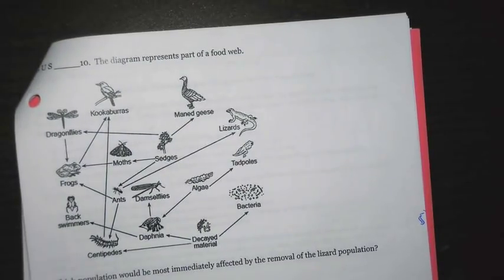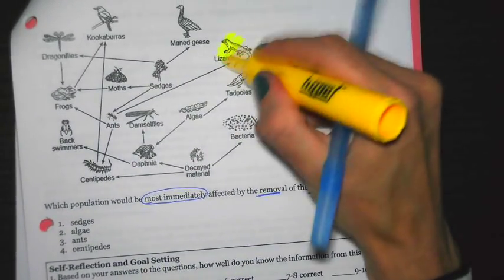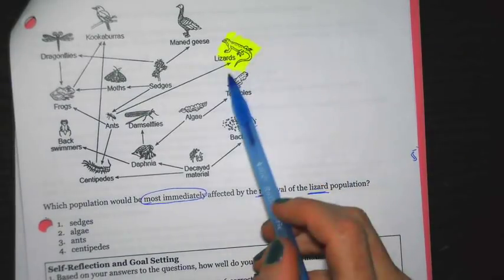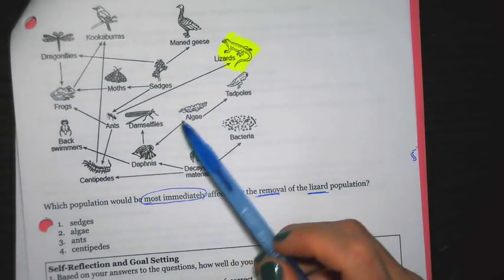Number ten, the diagram below represents a food web. Note a lot of those words, types of organisms, you're probably not familiar with. This is when those arrows are really important. Because they show you what organism is getting energy from another organism. Note the arrowheads are pointing in the direction of the energy flow. It says, which population would be most immediately affected by the removal of the lizard population? When I see lizard, what I immediately do is I go up to my picture and I find out where the lizard is. Once I've identified the lizard, I see where the arrow is connecting to.